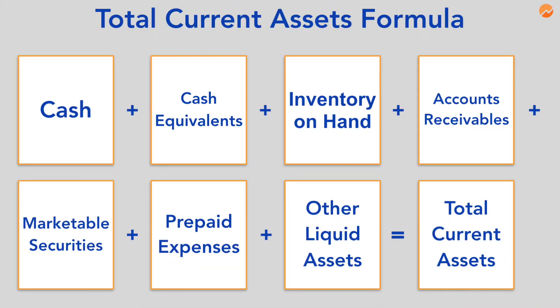In this video, we're going to show you how to use the Current Assets Formula to better manage your business's finances. Let's start by learning the formula. Your Total Current Assets are the sum of your cash plus cash equivalents, plus inventory on hand, plus accounts receivables, plus marketable securities such as stocks or bonds, plus prepaid expenses, plus other liquid assets. Let's break down what each of these assets are.